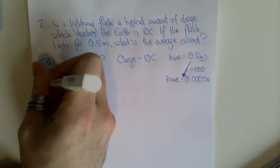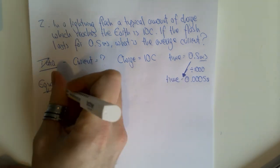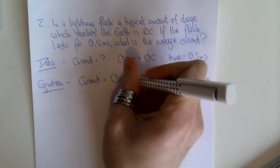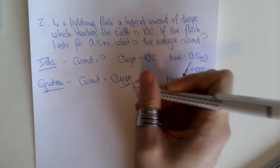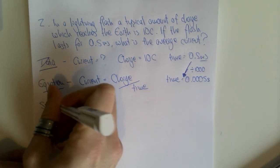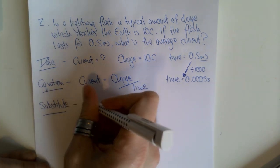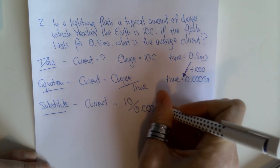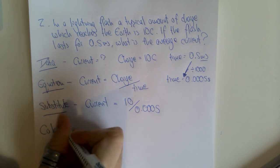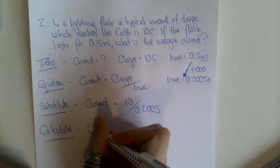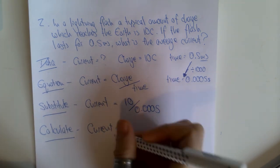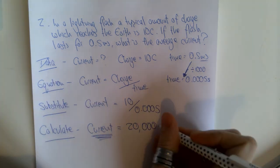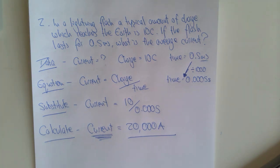Now we need our equation. We're looking for current, which equals charge divided by time. Substituting in our values: current equals 10 divided by 0.0005. Calculating that gives us 20,000 amps. Since we're finding current, our unit is amps. That completes our second worked example.